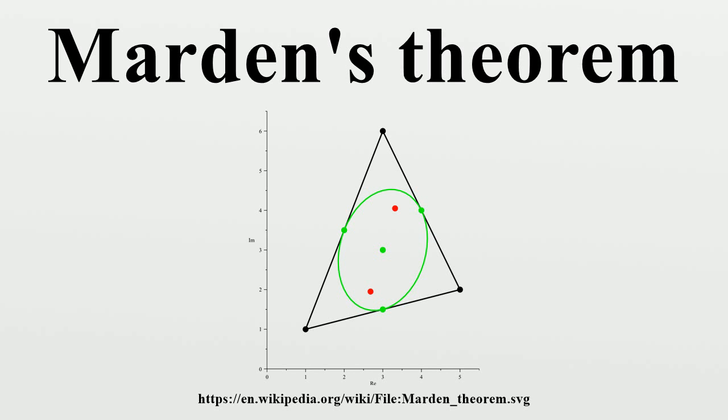Another generalization is to N-gons. Some N-gons have an interior ellipse that is tangent to each side at the side's midpoint. Marden's theorem still applies. The foci of this midpoint tangent ellipse are zeros of the derivative of the polynomial whose zeros are the vertices of the N-gon.